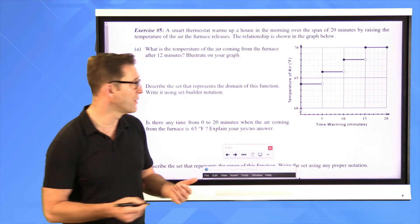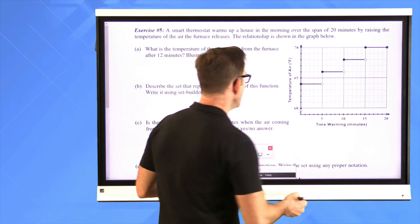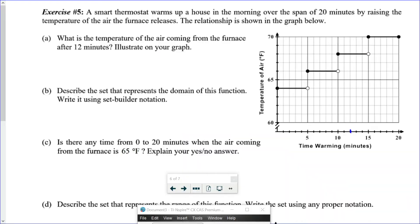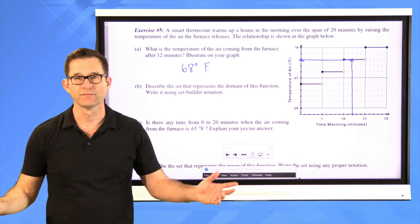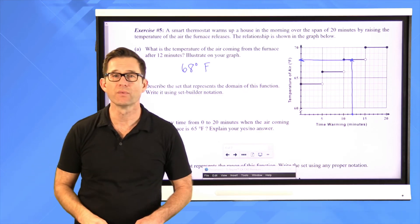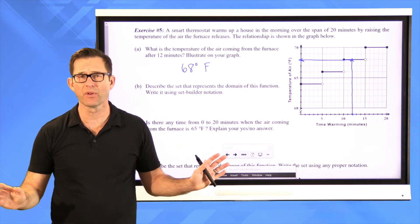Going over to 12 minutes on the x-axis and up to the graph, then across to the y-axis — counting up carefully: 65, 66, 67, 68. The temperature of the air coming from the furnace after 12 minutes is 68 degrees Fahrenheit.